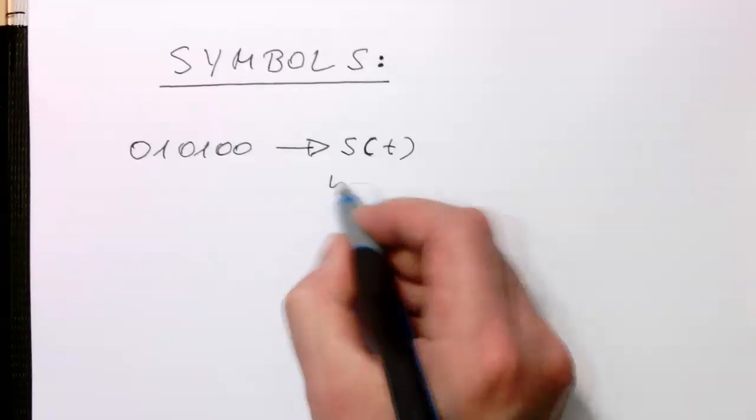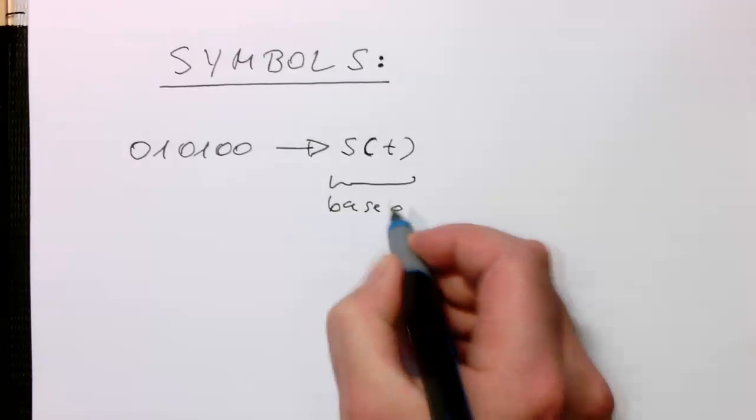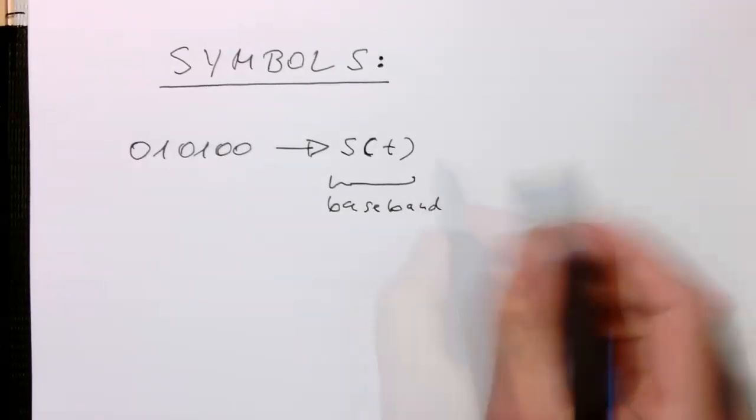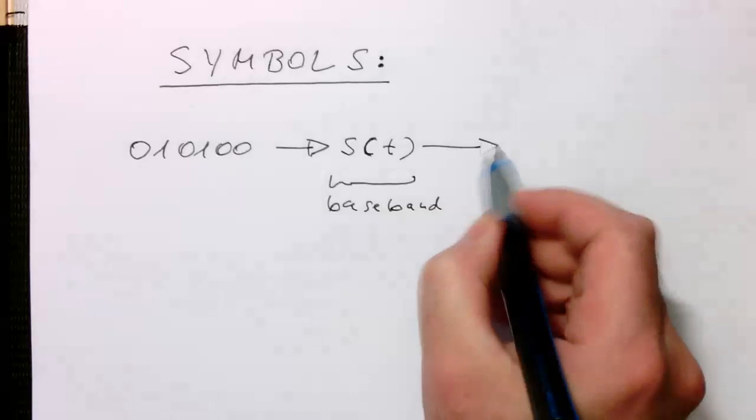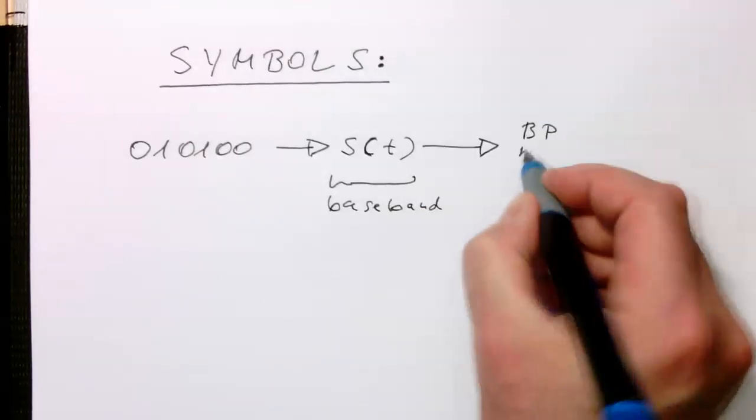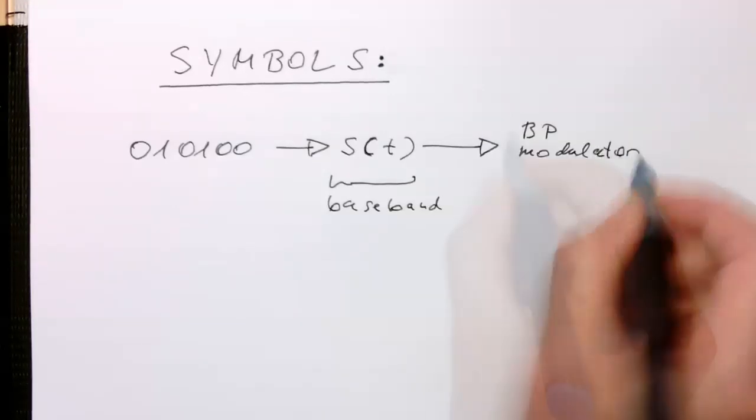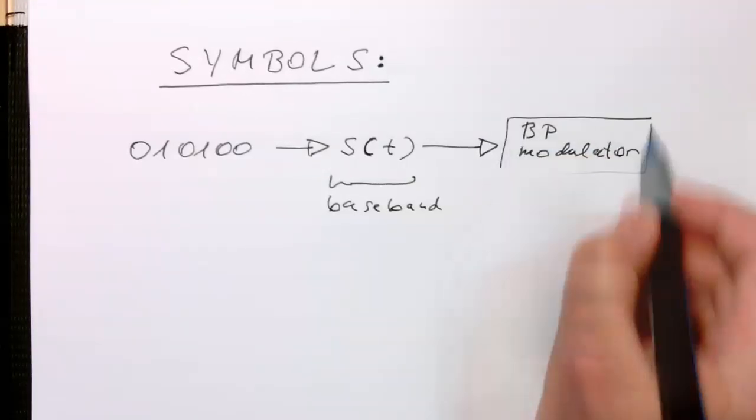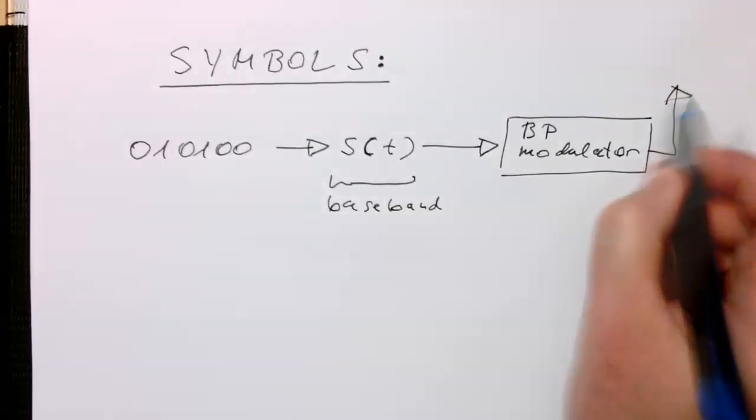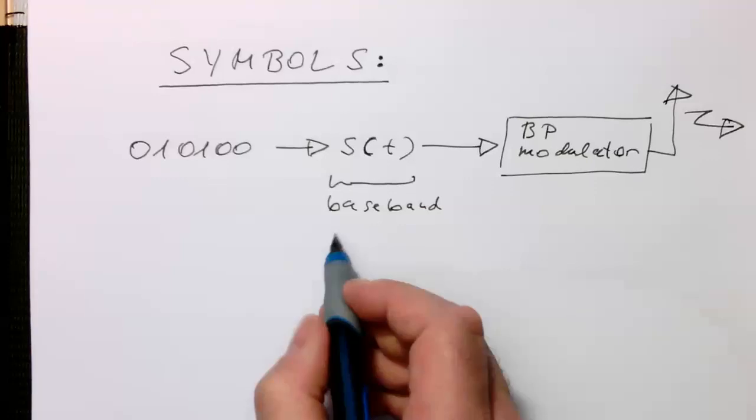The signal lives in the so-called baseband, and then this is transmitted to our bandpass modulator, and then this is going to our antenna and transmitted to the receiver. So the s(t)'s, they are lowpass filtered or baseband located signals.